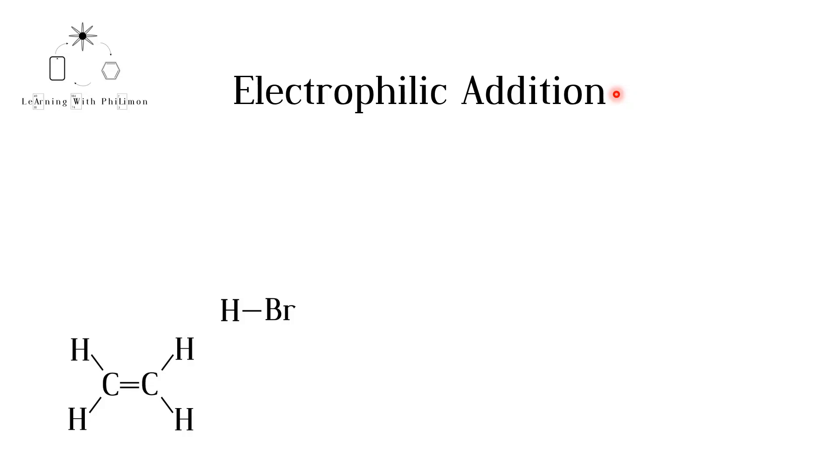Welcome to Learning with Philemon. In the previous video, alkenes, we learned that alkenes contain a double bond between two carbon atoms. We also learned that alkenes undergo addition reactions, in which this double bond breaks, and the two carbon atoms involved in the double bond form two new bonds.